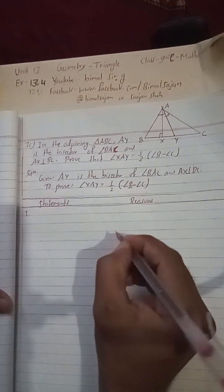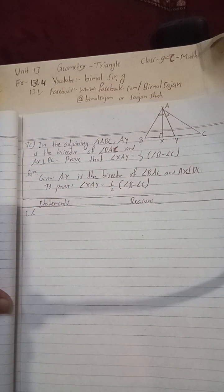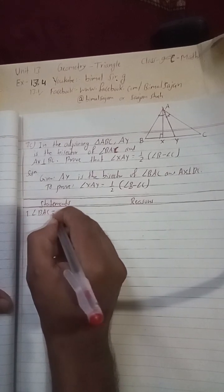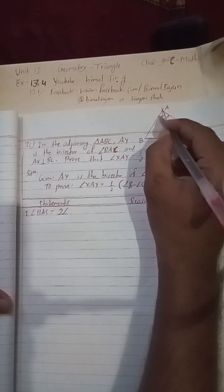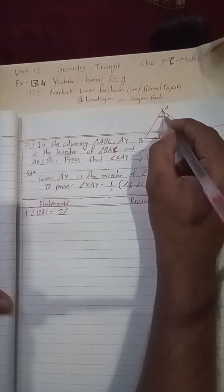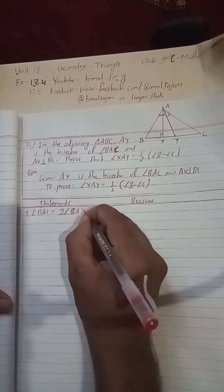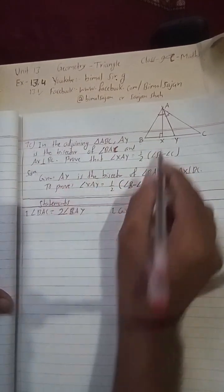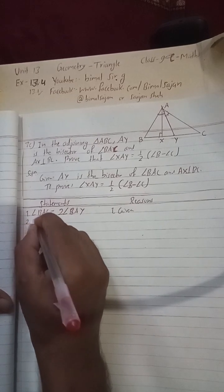Number one: angle BAC is equal to 2 times angle BAY. This is because AY is the bisector, so the two halves are equal, making the total angle equal to double this angle. The reason is: given that AY is the bisector of angle BAC.